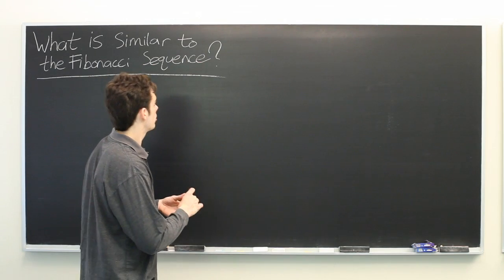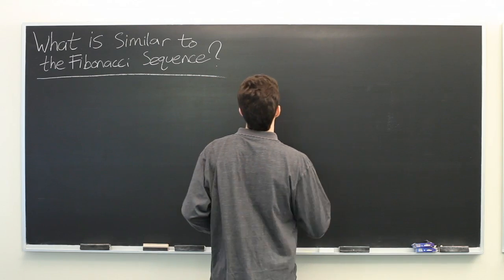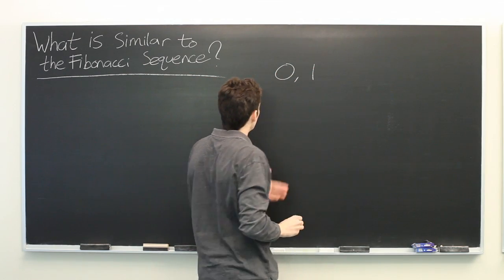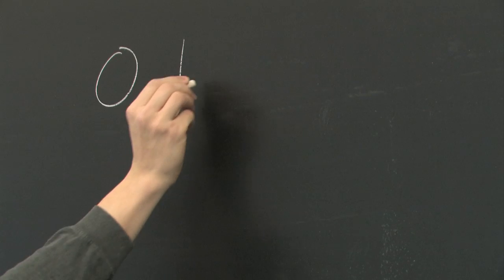So let's quickly review what the Fibonacci sequence is. The sequence of numbers, if you start with 0 and 1, the next term in the sequence is given by adding up the previous two terms.